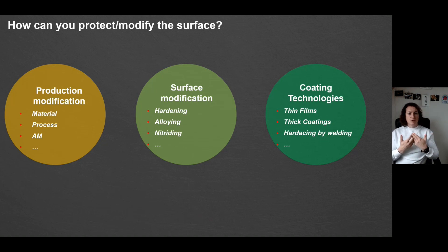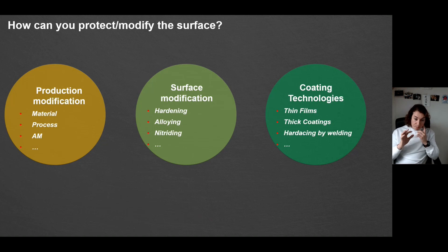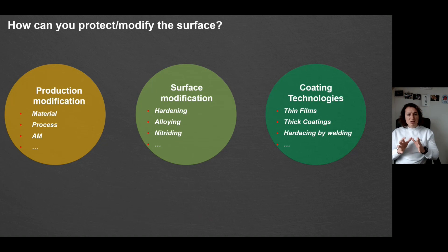Surface modification means you can harden the surface to change hardness, you can alloy the surface, changing properties such as roughness, mechanical properties, and corrosion resistance, or you can nitride the surface. These are three main directions, and there are a range of technologies used for that. The most important thing to note is that you do not add extra material to your surface — you primarily interact with the surface in depth.